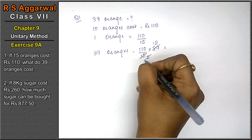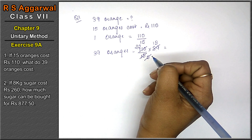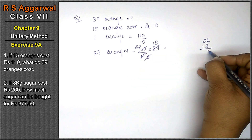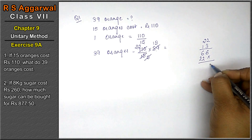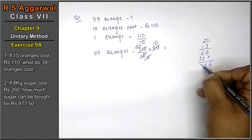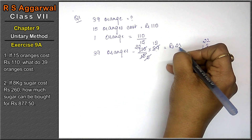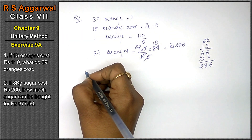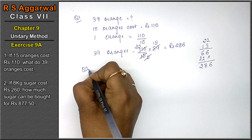Now calculating: three fives are 15, three ones are three — so we work through the multiplication. Two into thirteen gives us the result. That means rupees 286 will be the cost of 39 oranges. The answer is 286 rupees.